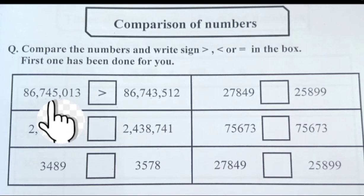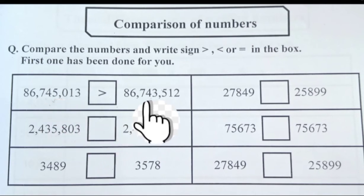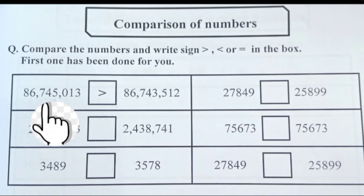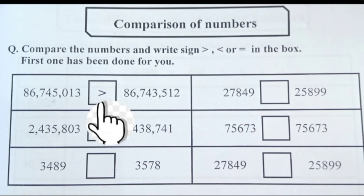On the left side, we have 745,000 and on the right side, we have 743,000. As 745,000 is greater than 743,000, we put the greater than sign in the box.